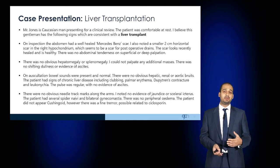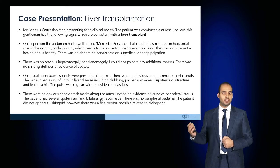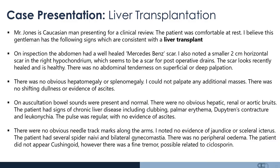The patient had signs of previous chronic liver disease including clubbing, palmar erythema, Dupuytren's contracture, and leukonychia. The pulse was regular and the patient appeared otherwise well. There were no obvious needle track marks, no evidence of jaundice or scleral icterus, and there were some spider naevi and bilateral gynaecomastia. There was no evidence of peripheral oedema. The patient did not appear cushingoid if it was a recent transplant, or appeared cushingoid if the transplant was old. There was a fine tremor and some gum hypertrophy related to possible cyclosporine use.